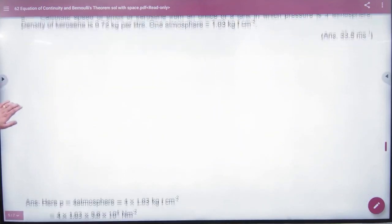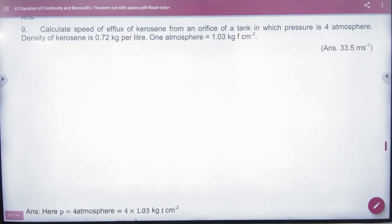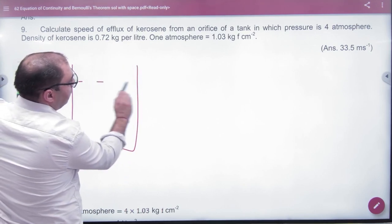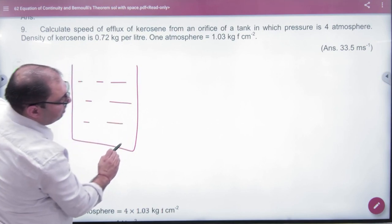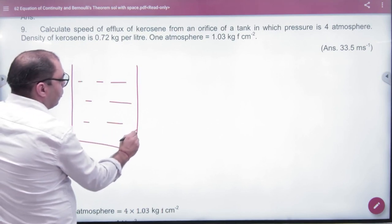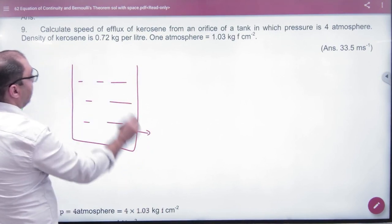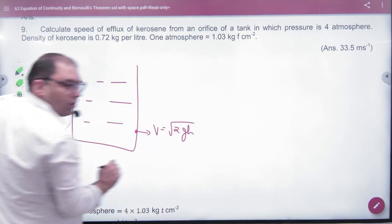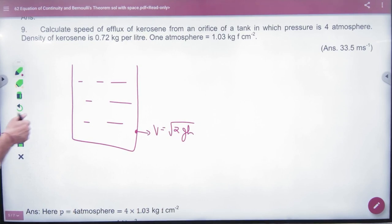After 8th question, number 9. Calculate speed of efflux of kerosene. We put kerosene here. Orifice of a tank in which pressure is 4 atmosphere. So this is the orifice. What do I want to find? I want to find efflux under root of 2GH. So if I understand liquid height, then what will I do? I will use pressure.